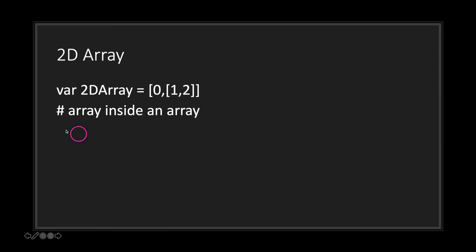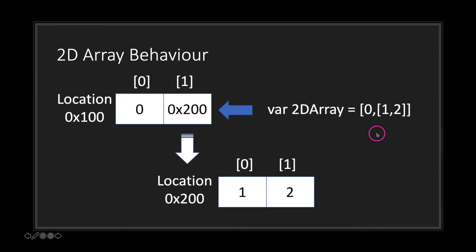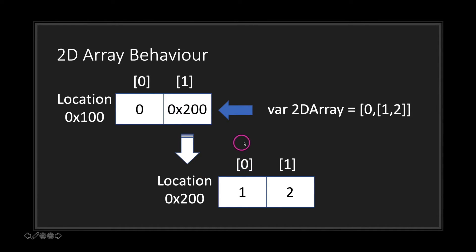Now let's take a look at how memory behaves with a 2D array. A 2D array is simply an array inside an array, which can also be referred to as a sub array. Our variable 2d array has the value 0 and then a sub array with the values 1 and 2. When we create 2d array and assign it a value, we reference a location in memory address. Our index at 0 has the value 0, but our value at index 1 is a reference to another memory address location. When we create a sub array we're calling a reference to another location in address memory, and from there we continue our values — index 0 is 1 and index 1 is 2.